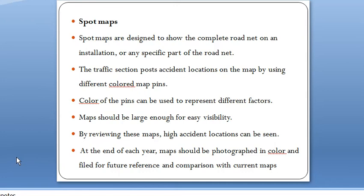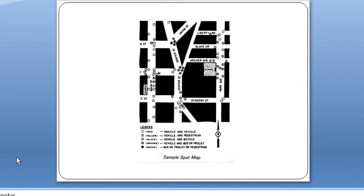At the end of each year, maps should be photographed in color and filed for future reference and comparison with current maps. In the spot map, dots without filling indicate vehicle-to-vehicle collision, a circle with one intersection indicates vehicle-pedestrian accident, and vehicle-bicycle type accidents are also marked. By visualizing this spot map we can identify which type of accident occurs and which location has the maximum accidents.